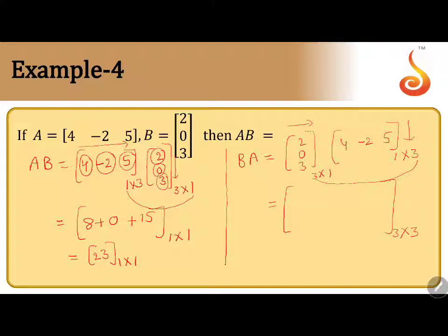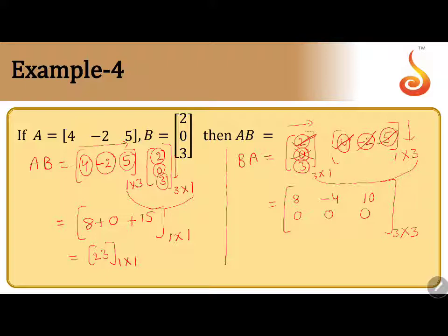First row, first column: 2 into 4 equals 8. First row, second column: 2 into -2 equals -4. First row, third column: 2 into 5 equals 10. Second row, first column: 0 into 4 equals 0. Second row, second column: 0 into -2 equals 0. Second row, third column: 0 into 5 equals 0. Third row, first column: 3 into 4 equals 12. Third row, second column: 3 into -2 equals -6. Third row, third column: 3 into 5 equals 15.